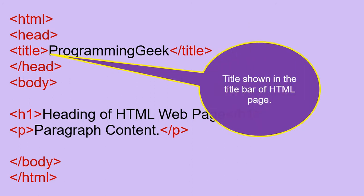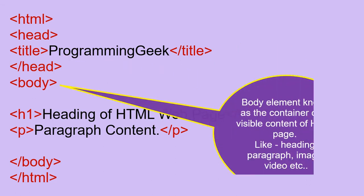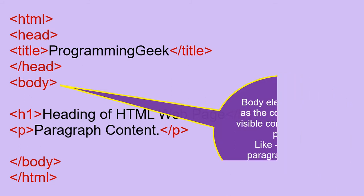The title element is shown in the title bar of the HTML page. The body element is known as the container of all visible content of the HTML page, like heading, paragraph, image, video, etc.